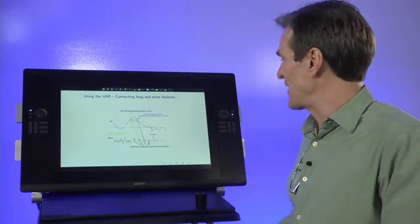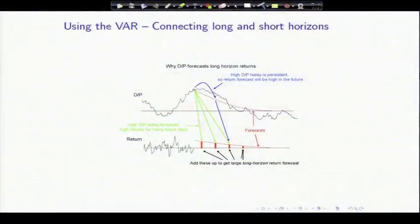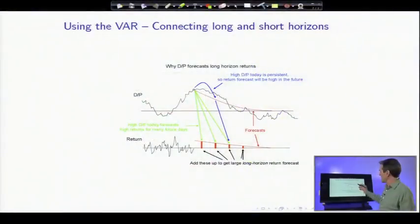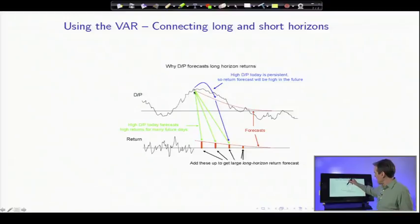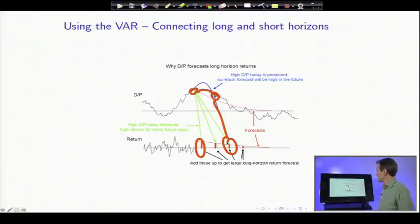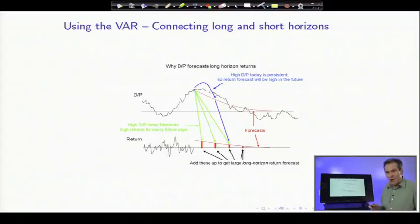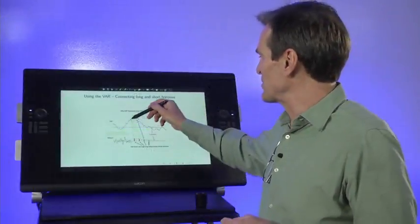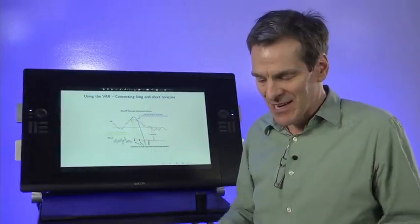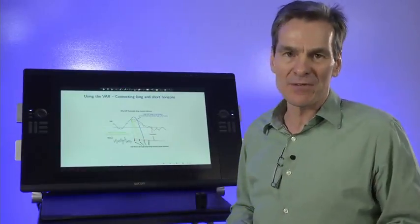So both coefficients and R-squareds rise with horizon, not because of anything magic about long horizons, simply because the forecasting variable itself is very serially correlated. Here's a picture version of that intuition. Here's a slow-moving forecasting variable. The slow-moving forecasting variable forecasts long horizon returns. Why? Because if it's high today, and it's forecasting a high return for tomorrow, if it's high today, it's going to be high again tomorrow, and therefore forecast a return for the day after tomorrow. So all the little returns add up. The long and short horizon things are purely related by the persistence of the forecasting variable. That's one of the nice things we can see right away by using this vector autoregression.